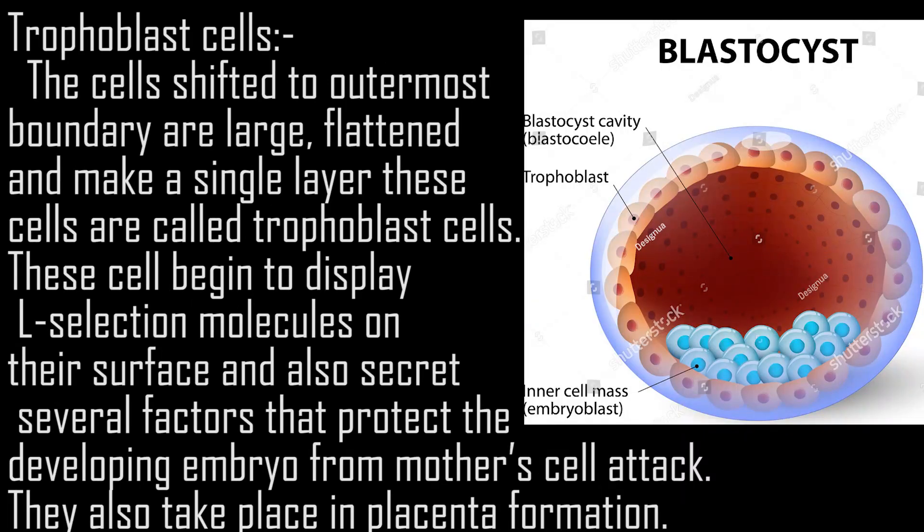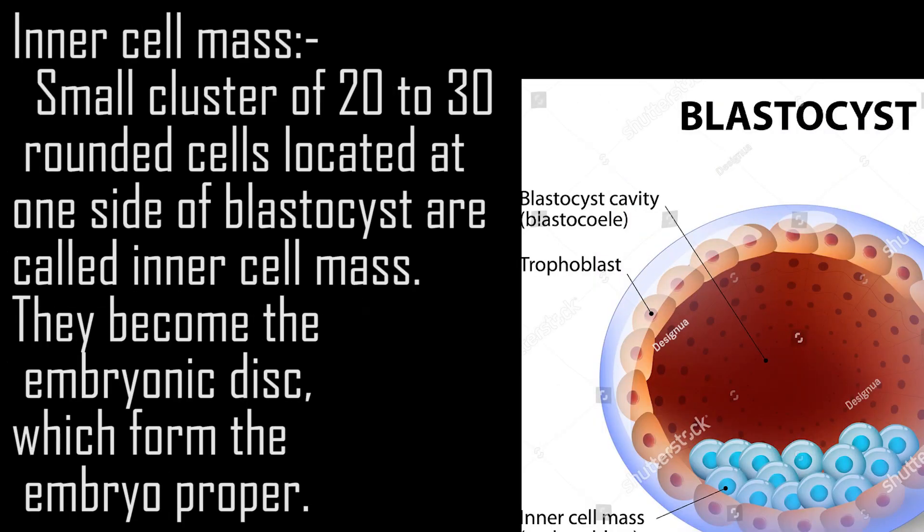Trophoblast cells: The cells shifted to the outermost boundary are large, flattened, and form a single layer — these are called trophoblast cells. These cells begin to display L-selectin molecules on their surface and secrete several factors that protect the developing embryo from the mother's immune cell attack. They also participate in placenta formation.